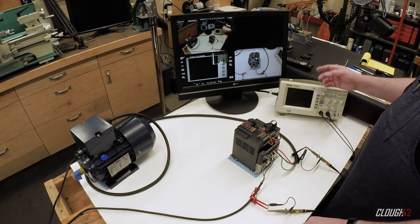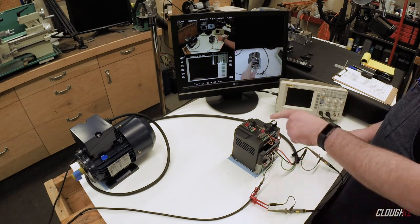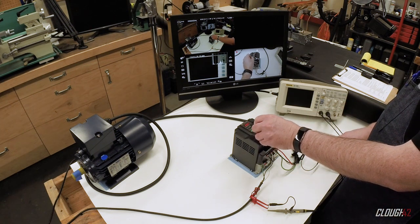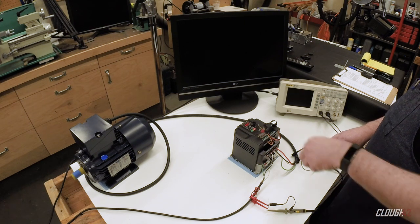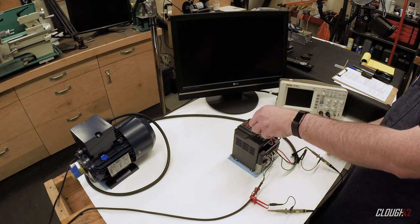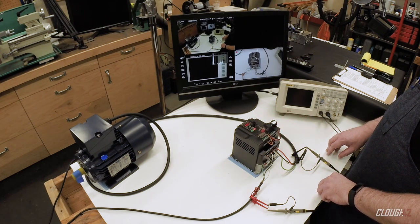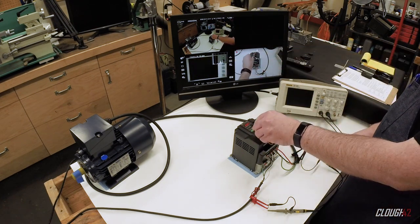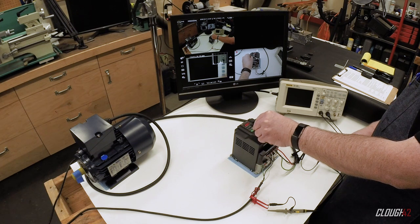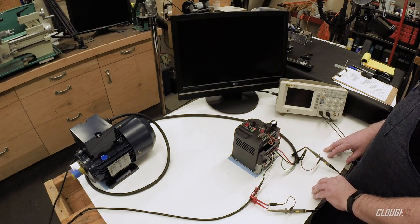Now watch what happens to the monitor when I turn on the VFD. I've just got this set around 20 hertz. You can see the monitor goes completely blank. Now depending exactly where the monitor is in the shop and which circuit it's plugged into, sometimes it just gets jittery and I lose horizontal sync, but sometimes, like right here, it just shuts off completely.